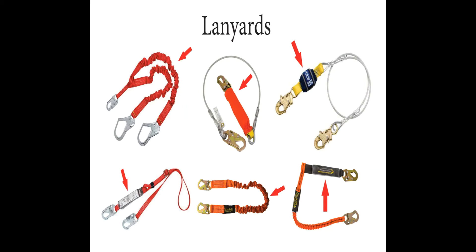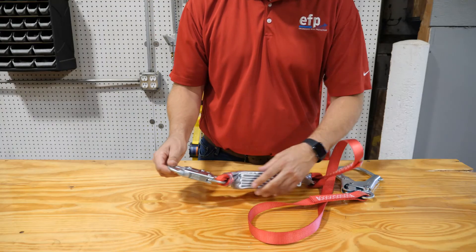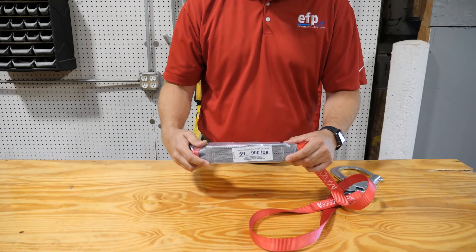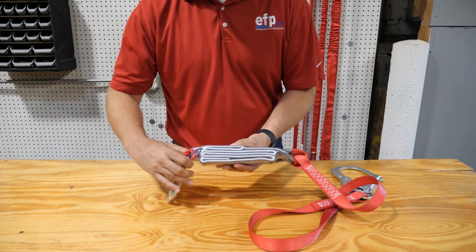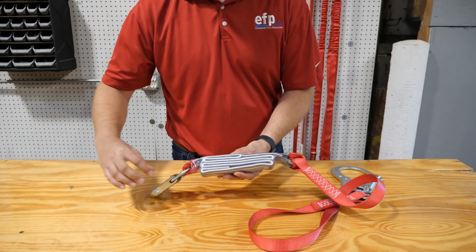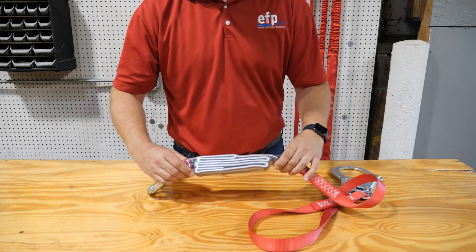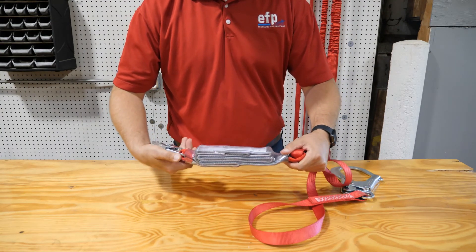OSHA requires the maximum forces on the body in a fall to be less than 1,800 pounds. A shock absorber is a pack of webbing stitched in a way that, when deployed, decreases forces on the body below 1,800 pounds. Most manufacturers decrease forces to under 900 pounds. If any of the webbing is torn out, the lanyard must be discarded.